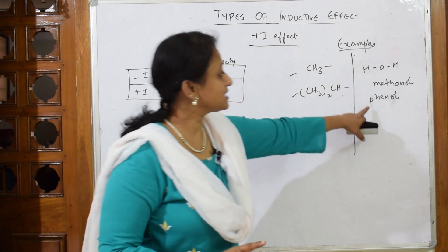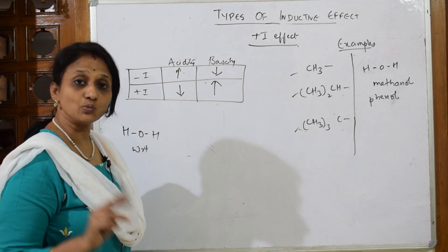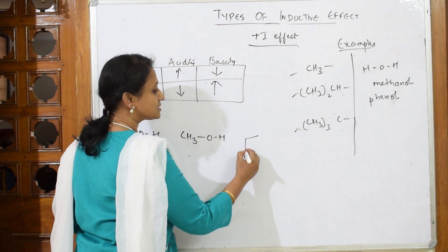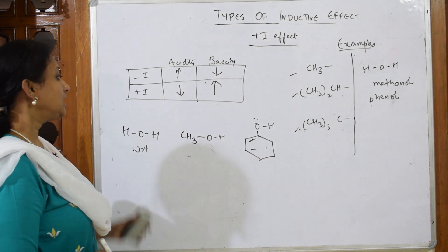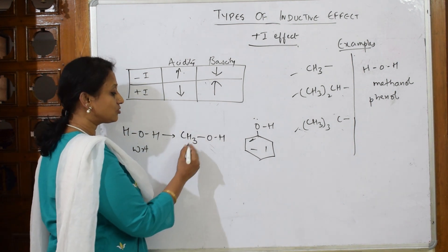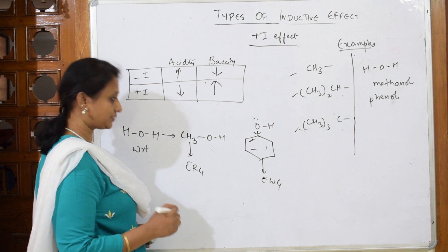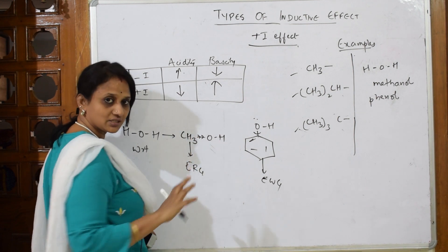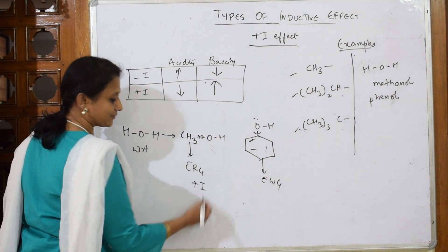Let's take an example. With respect to water, I'm comparing methanol and phenol. Methanol formula is CH₃OH; phenol formula is C₆H₅OH. Now in methanol, CH₃ is an electron releasing group. In phenol, the benzene ring is an electron withdrawing group.